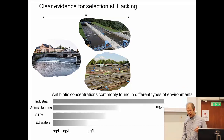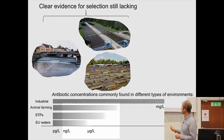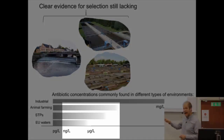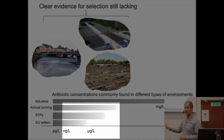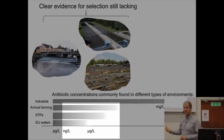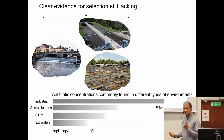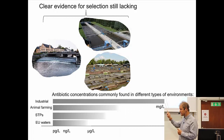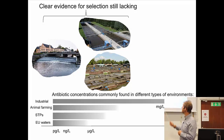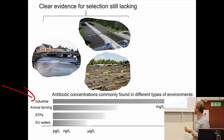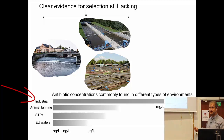I would argue that there might be selection occurring at those concentrations, and we have lab experiments suggesting that, yes, this does select for resistance in the lab. But the final proof that this happens in real-life environments is not really there yet — in contrast to the manufacturing-polluted environments, where there is no doubt about it.